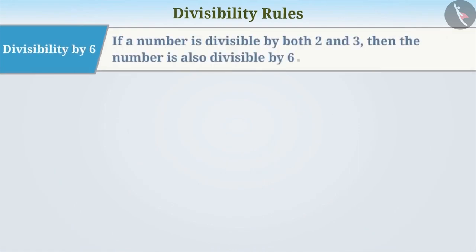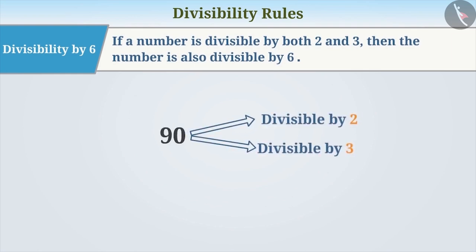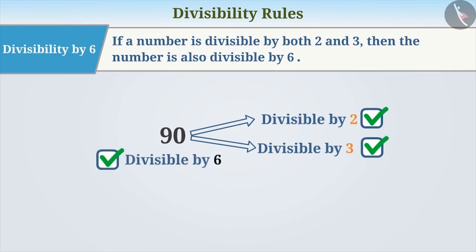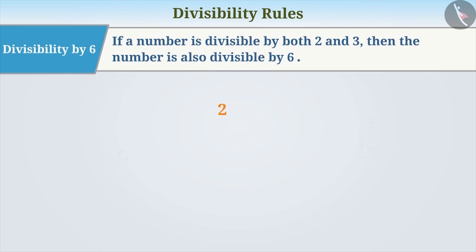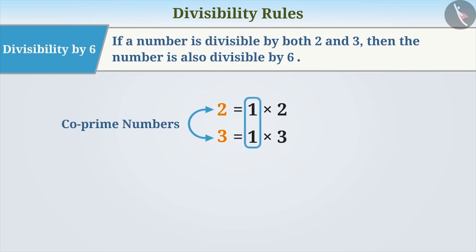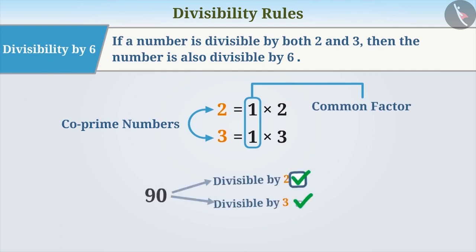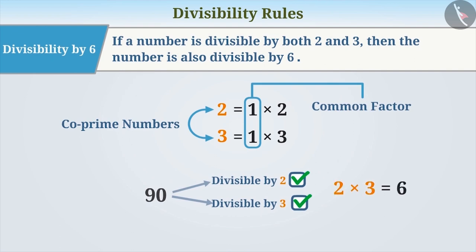Divisibility by 6: If a number is divisible by both 2 and 3, then the number is also divisible by 6. Let's find out why this rule works. Here, 2 and 3 are co-prime numbers. That means, other than 1, there is no common factor for 2 and 3. If 2 co-prime numbers completely divide a number, then the product of those 2 co-prime numbers also divides that number completely. We can simply say that to check the divisibility by a number, we can check the divisibility by its co-prime factors.